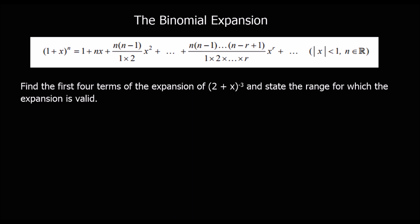The binomial expansion is given to us in the formula book. So we've got (1 + x)^n — importantly, we need a 1 at the front. If we haven't got 1 at the front, we're going to factorise that out. So (1 + x)^n is given by 1 + nx + n(n−1)/2 · x² + n(n−1)(n−2)/6 · x³ + n(n−1)(n−2)(n−3)/24 · x⁴, and it keeps going following that pattern.